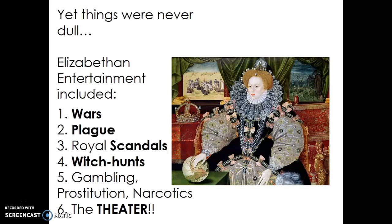Elizabethan entertainment included wars. Here's an image of Queen Elizabeth — she's so beautiful. This is called the Elizabethan era because she was the queen during that time, but she was constantly at war. There was also plague. You've probably heard of the Black Death or the Black Plague — this took out a third of Europe's population and was really devastating. The plague was carried by fleas that were carried on rats. If you've ever heard 'Ring Around the Rosie,' consider the lyrics again, because it's actually describing the Black Death.